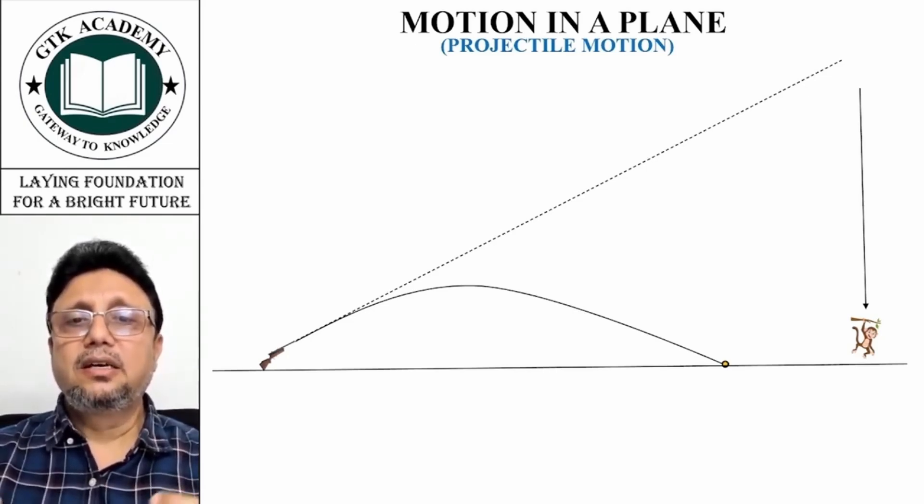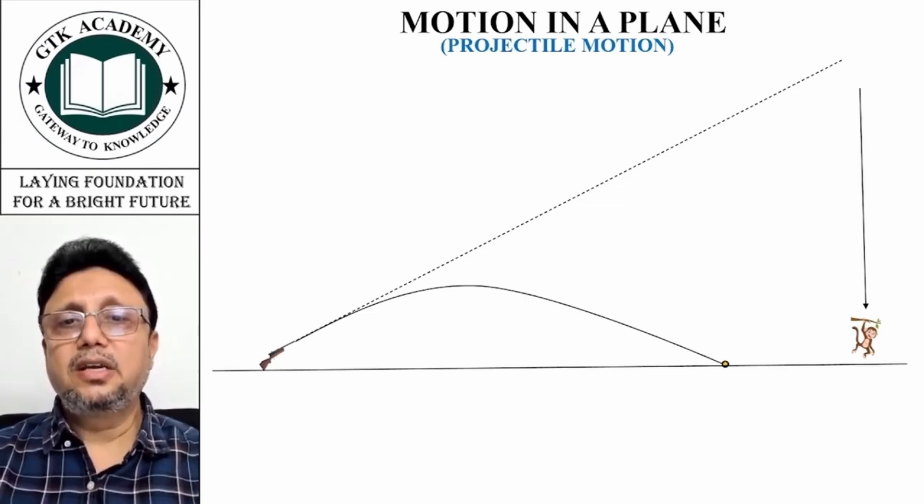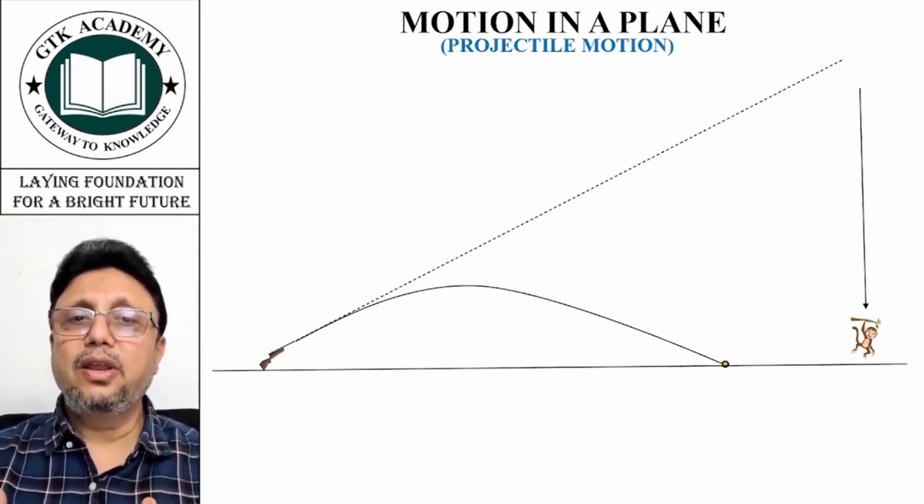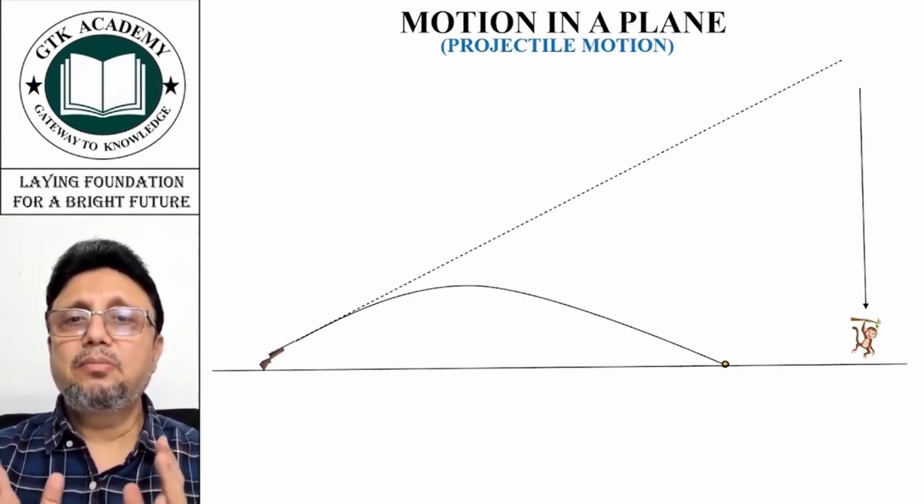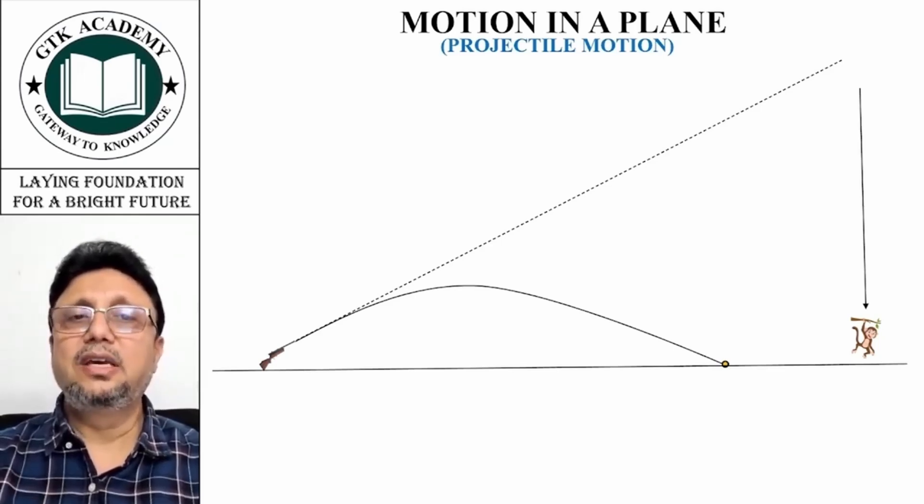Now you may wonder why the monkey will get hit. We can say with certainty the monkey is going to get hit because both are falling with the same acceleration due to gravity.